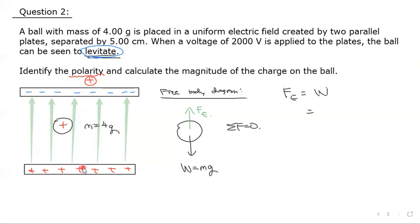Now the weight force equals mg, of course. The mass is 4 grams, which is 0.004 kilograms, so that's 0.004 times 9.8, and that gives you some answer of about 0.0392.